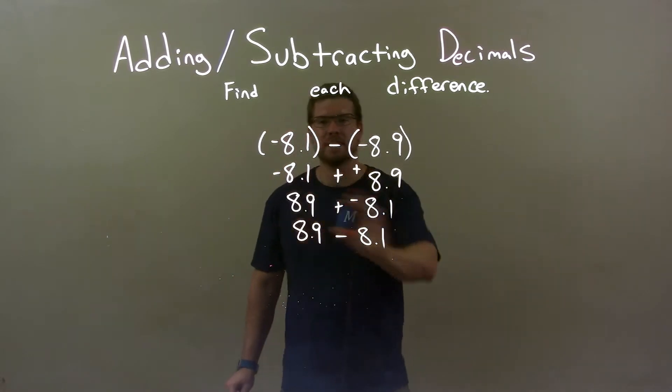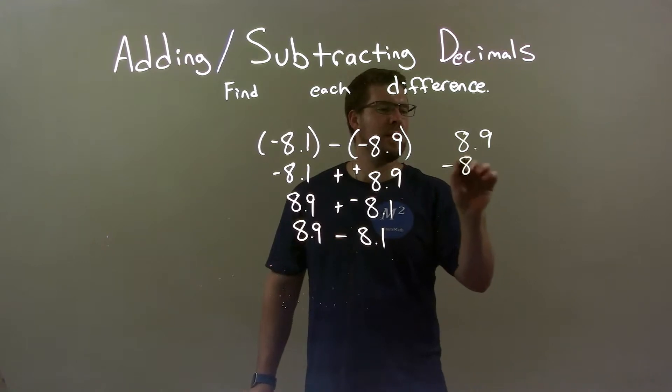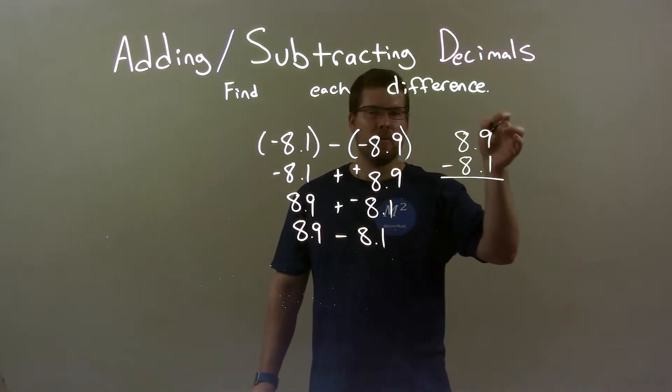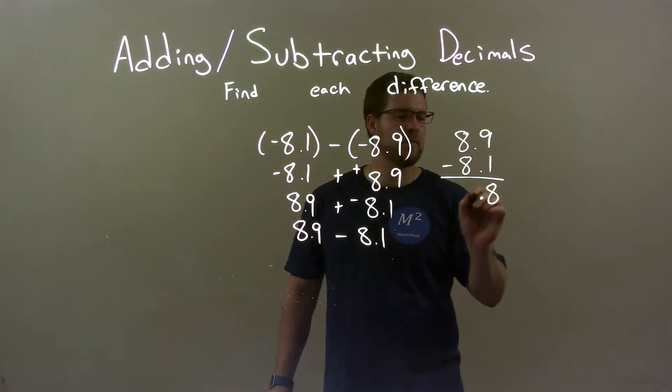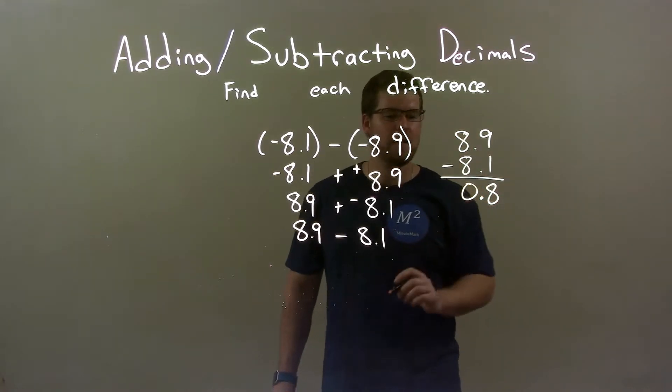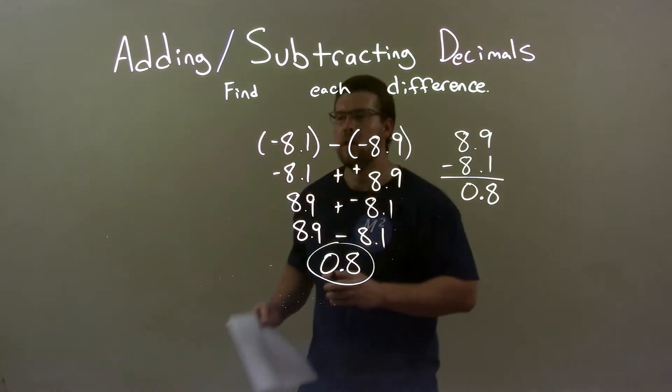And now I know I can set it up to be an easy subtraction problem. 8.9 minus 8.1. We line it up, decimals lined up. 9 minus 1 is 8, decimal point here, 8 minus 8 is 0. And so my final answer here is 0.8.